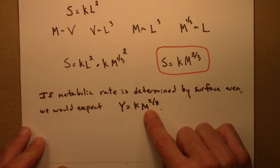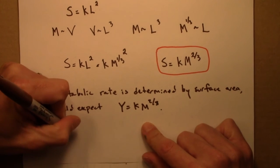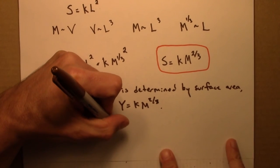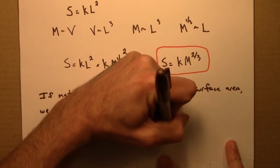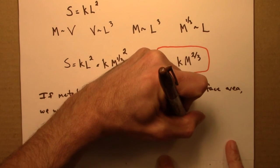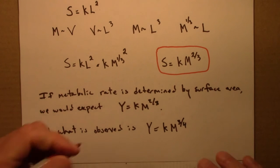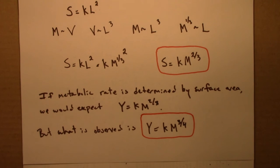We actually see that M scales to the 3 quarters power law. What is observed is that the metabolic rate Y scales as the mass of the creature to the 3 quarters power. So the question then is where does this 3 quarters come from? And I'll talk about that in the next couple of videos.